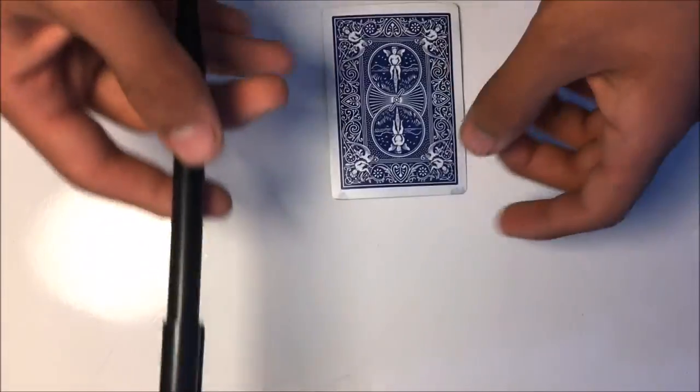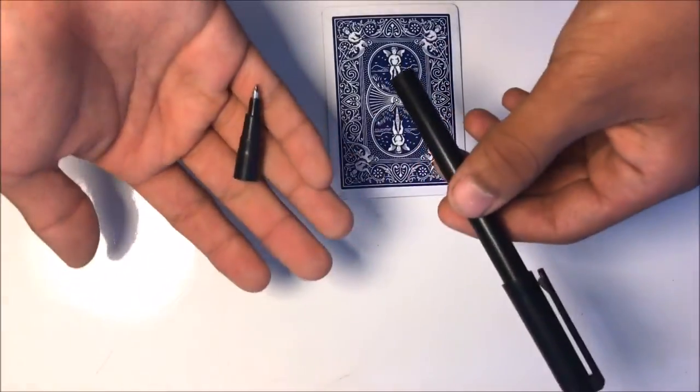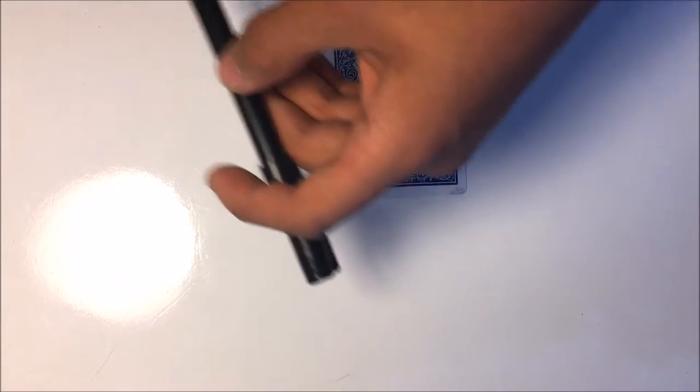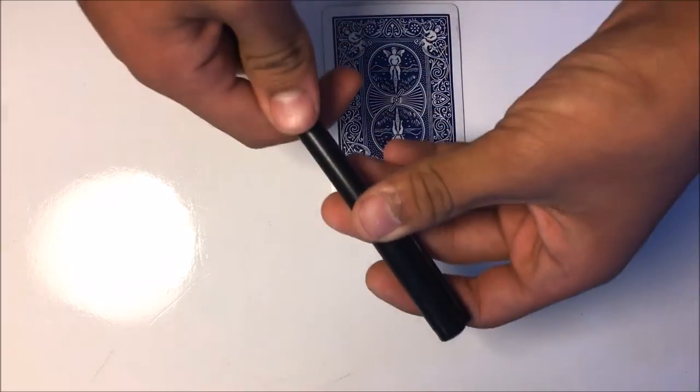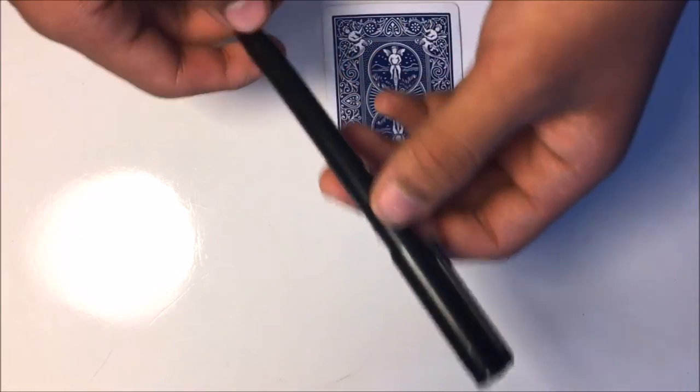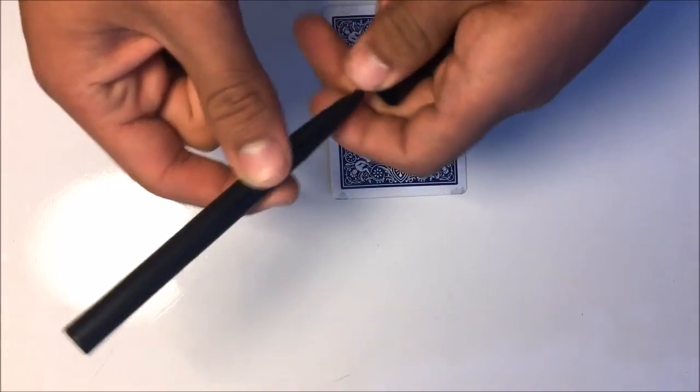When you give out the pen for inspection, just give the pen out like that. Palm the fake tip, put it in your pocket. So, basically, just take the tip and just give them the pen. And they can inspect it. It's a completely normal pen. They can also inspect the card and the deck.